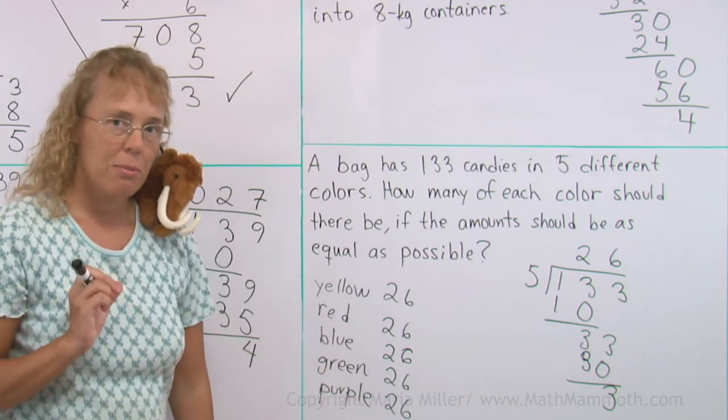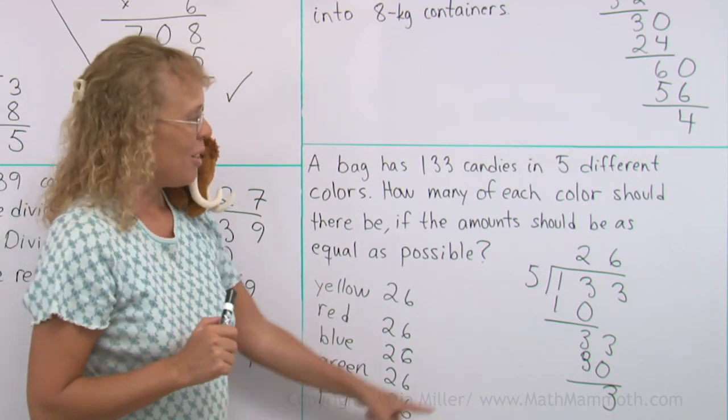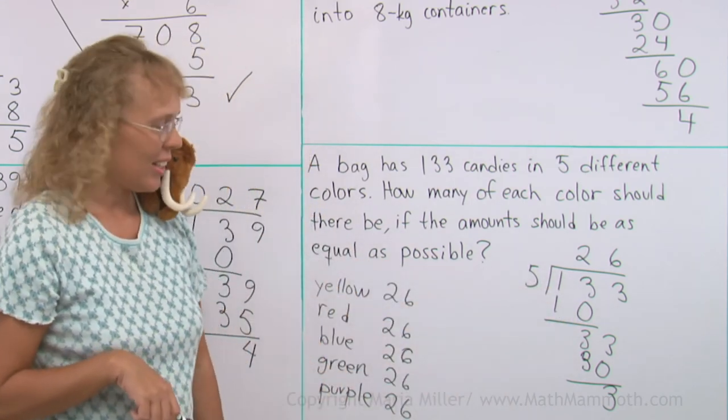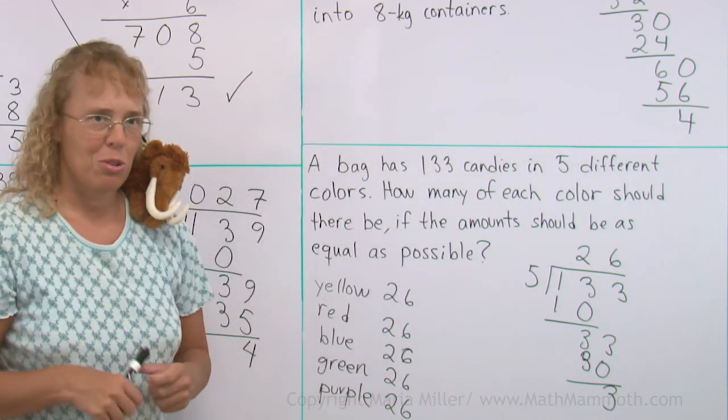But, 5 times 26, all of this added together, is not 133. It's just 130. Because there's three candies still left over, so to speak.